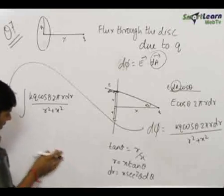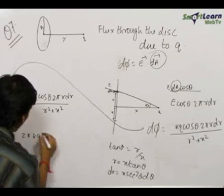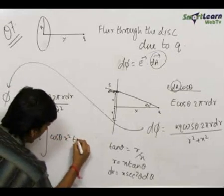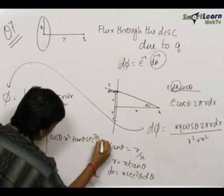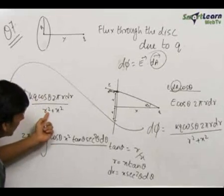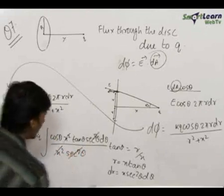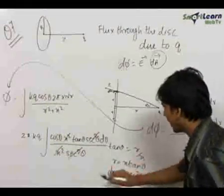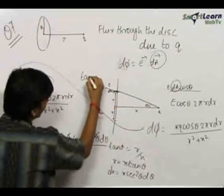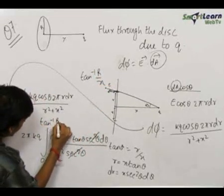Substituting, we integrate in terms of theta. 2πkq comes outside. Inside we get cos theta times r dr, where r dr equals x² tan theta · sec² theta d theta, divided by r² + x² which equals x² tan² theta + x² = x² sec² theta. The x² sec² theta cancels, and we get the integral of sin theta d theta. The limits will be from theta equal to 0 to tan⁻¹ of capital R upon x.